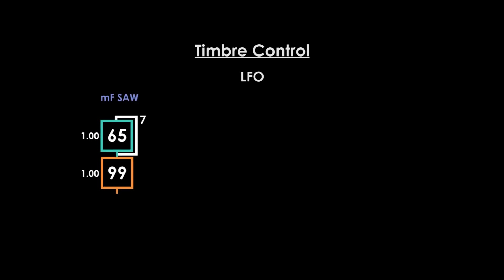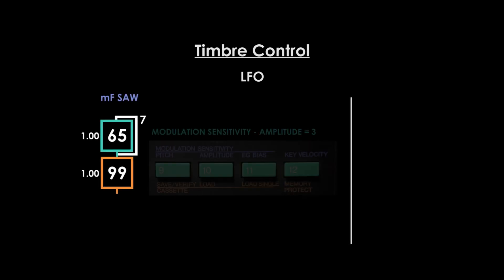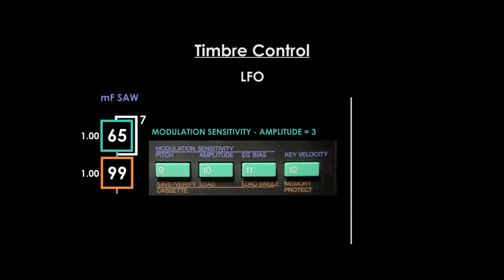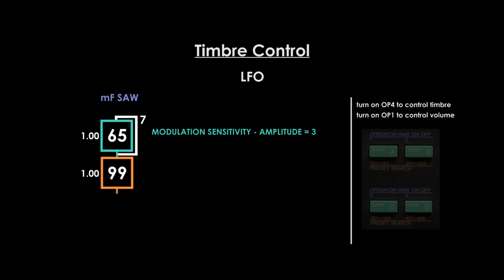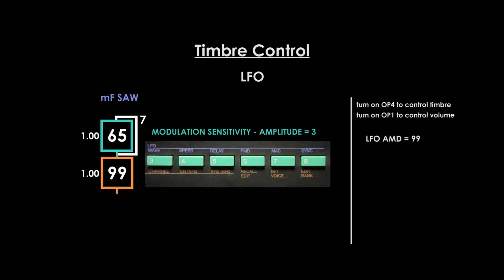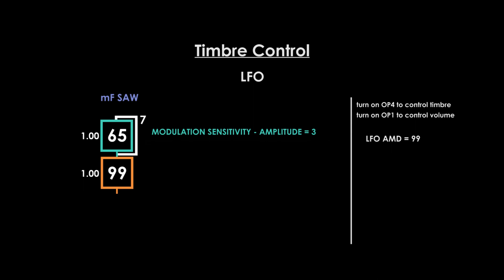Select MF Saw again to reset the patch. Go to mod sensitivity AMS and set it to a maximum value of 3. Switch your modulator on. Next press LFO AMD and adjust the value from 0 to 99 for the preferred intensity. You can adjust speed and waveform for your preferred effect. In this following example I've set the speed to 10 and I'm switching through the waveform variations so you can hear the differences.